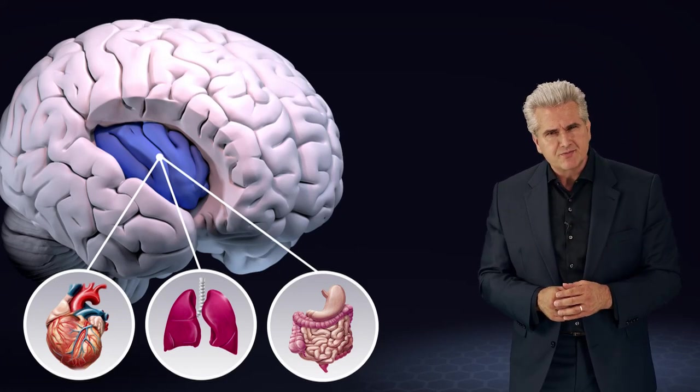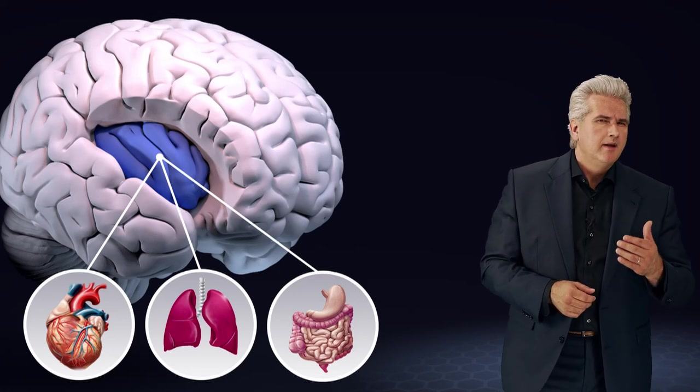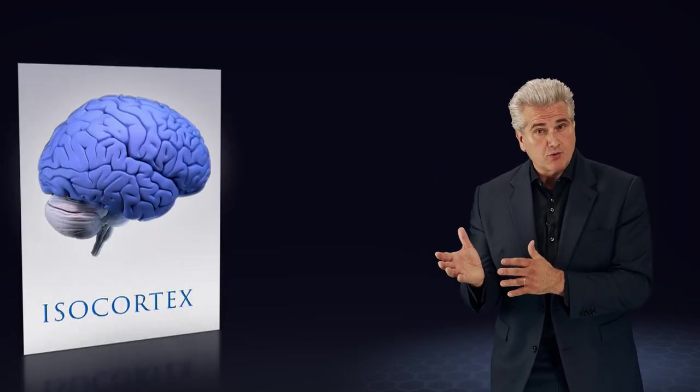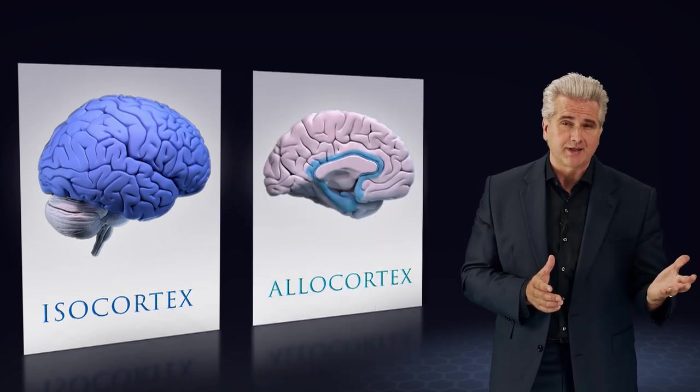What does this mean? The cerebral cortex of the human brain can histologically be subdivided into two major parts, the isocortex and the allocortex.